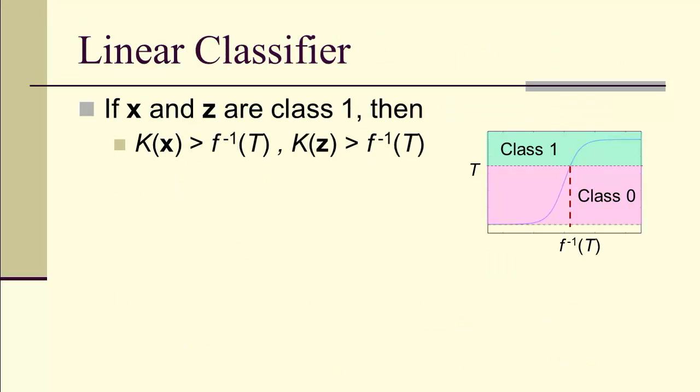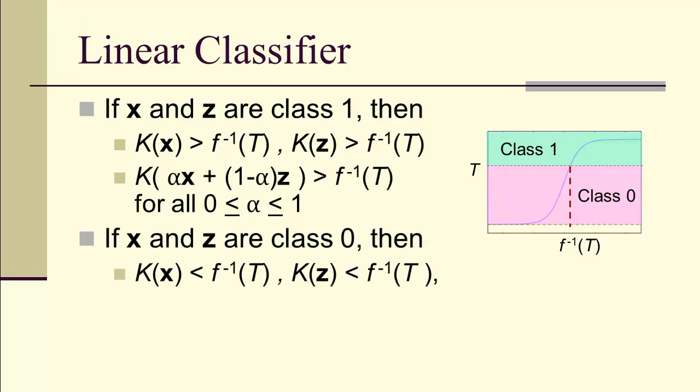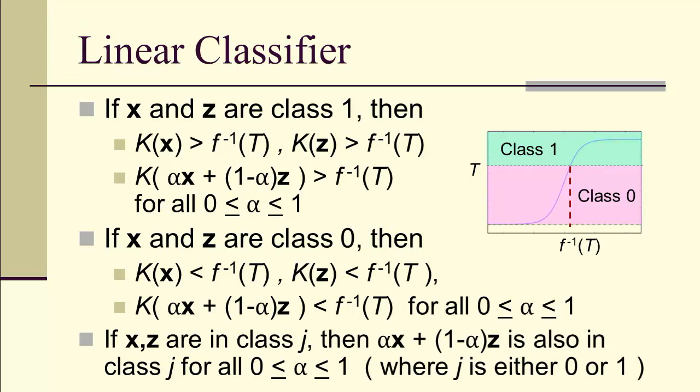If x and z are both in class 1, then this special linear combination, which we're going to call a convex combination, is also in class 1. Likewise, if x and z are class 0, then the kernels are less than f inverse of T, and therefore the kernel of the linear combination for 0 ≤ alpha ≤ 1, which again we're going to call a convex combination, is also in class 0. In general, if x and z are in class j, then alpha x plus 1 minus alpha z is also in class j for all 0 ≤ alpha ≤ 1. In this case j is either 0 or 1.